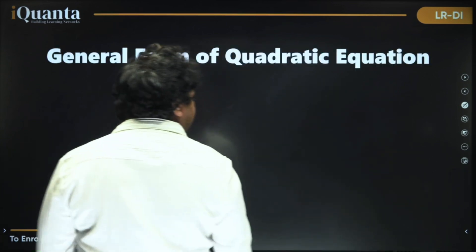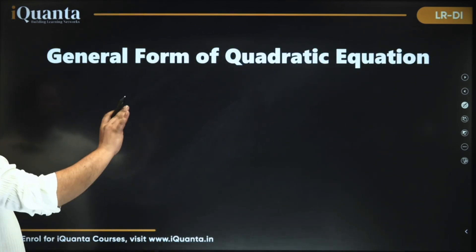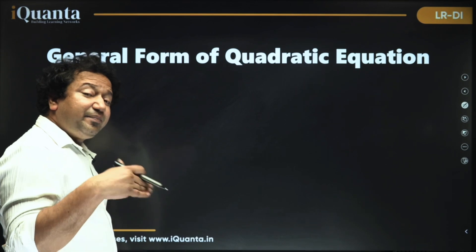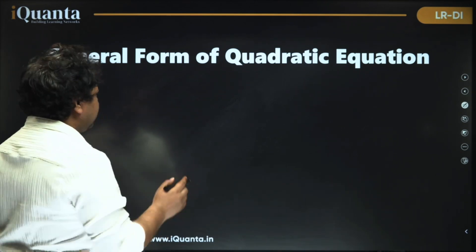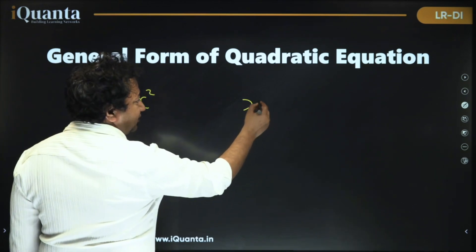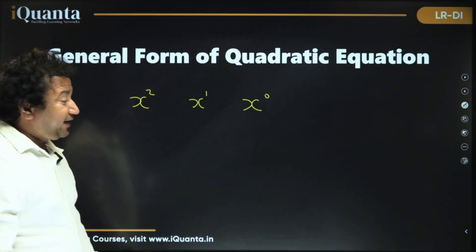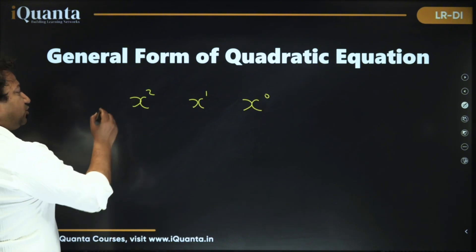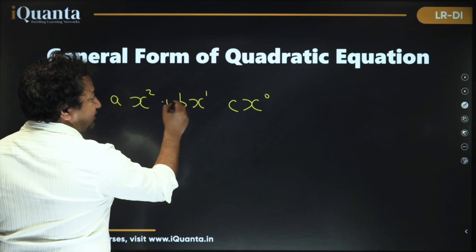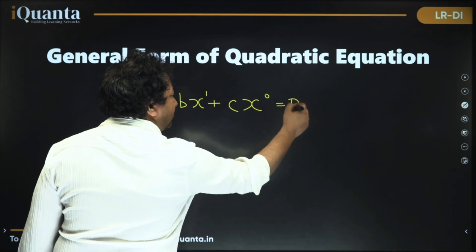First of all we need to understand what is general form of a quadratic equation. When we say quadratic equation the degree is 2, that means the highest power of the independent variable which will be x in this case is 2. So if the highest power is 2 which will be 0 obviously and in between we'll also have 1. So these three terms must be there. At least this must be there and let the coefficient of x square be a and x be b and this be c so that is what we have equated to 0. Right now it's a quadratic expression, moment I equated to 0 it becomes a quadratic equation.